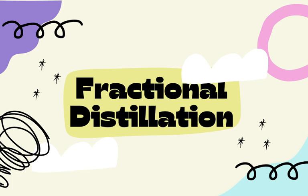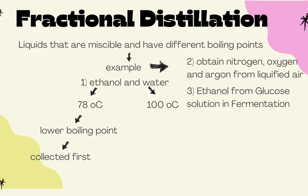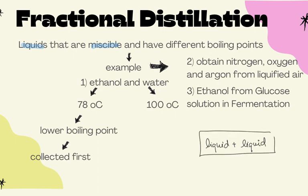Another distillation method is called fractional distillation. In fractional distillation, we are trying to separate miscible liquids — a liquid mixture where both liquids can be mixed together and appear as a single homogeneous solution. The first example we use is ethanol and water.